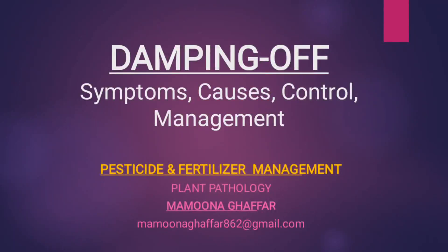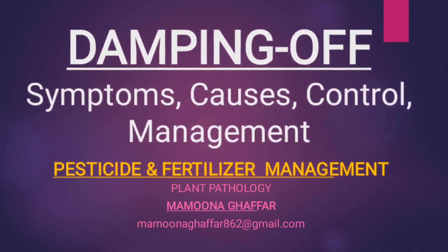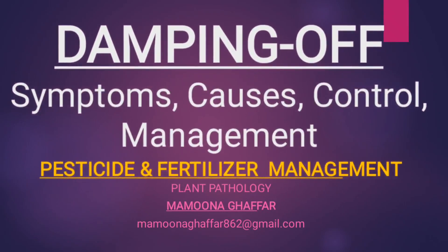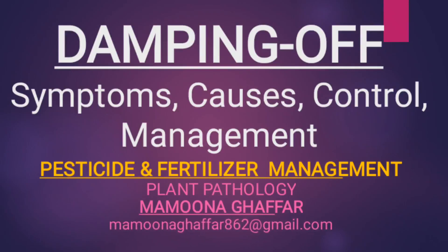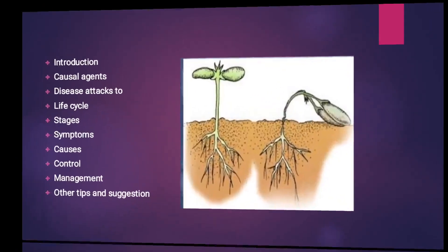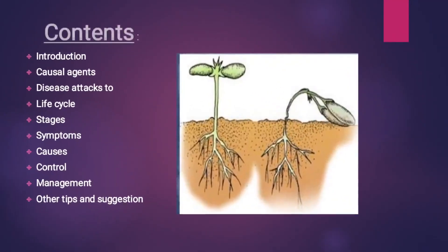Hello, today we will discuss about a plant disease — damping-off plant disease. We will discuss the symptoms, causes, control, and management of the disease. It is under the category of plant pathology, or subcategory of pesticide and fertilizer management. Here is the basic content of the damping-off disease we will discuss in the video: casual agents, disease attacks, life cycle, strategies, symptoms, causes, control, management, and other tips and suggestions.